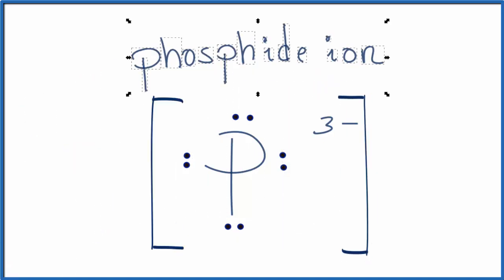That's the Lewis structure for the phosphide ion. This is Dr. B, and thanks for watching.